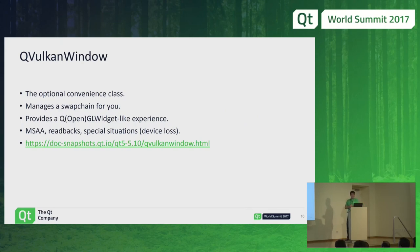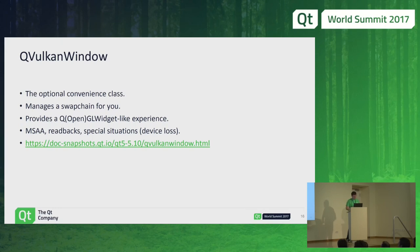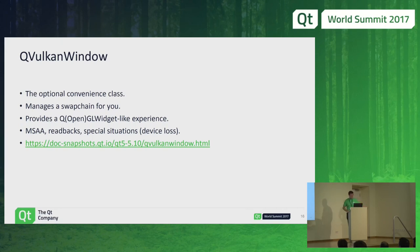QVulkanWindow is the optional convenience thing; the goal is to provide a QOpenGLWindow or QOpenGLWidget-like experience. Its API model is modeled after QQuickFramebufferObject, and it should still be fairly simple. It has things like multi-sampling support and simple grabbing — getting a QImage from the content, which is inefficient but useful for testing or saving screenshots. It also tries to handle special cases like device loss more gracefully; if you do your own QWindow, you need to handle these things yourself.